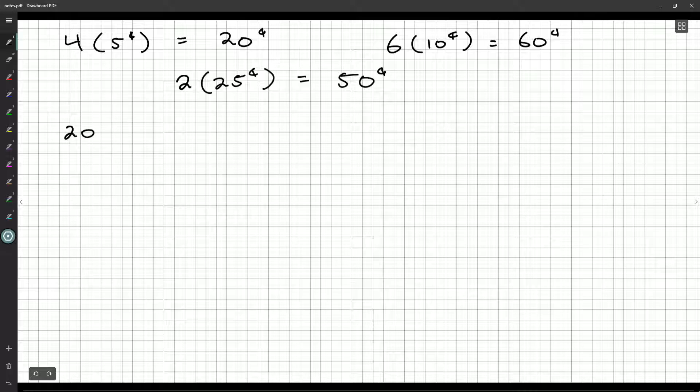So our ratio is 20 cents to 60 cents, the dimes, to 50 cents, the total, the value of the quarters. All right. Now, this doesn't look like any of the presented answers, but if we divide by 10,